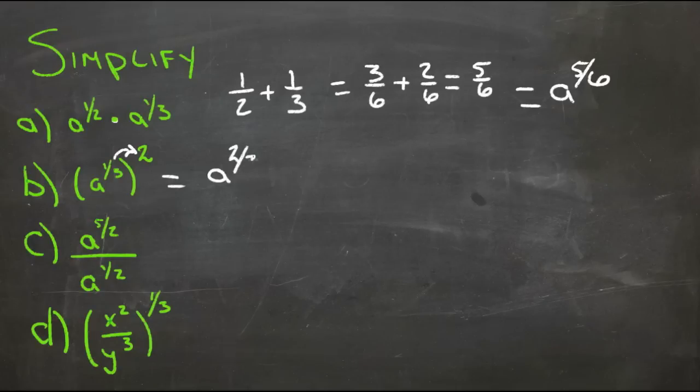For this one we're dividing powers by powers so that means that we subtract. So we have five-halves minus one-half. So if we have five-halves and we take away one-half that gives us four-halves or two. So we have a to the five-halves divided by a to the one-half equals a squared.